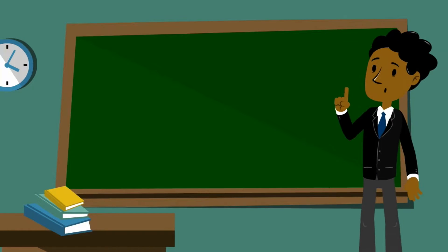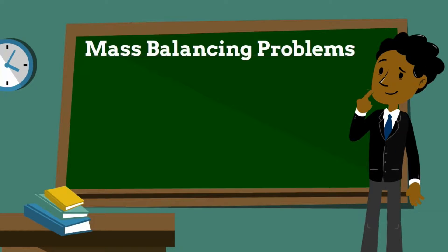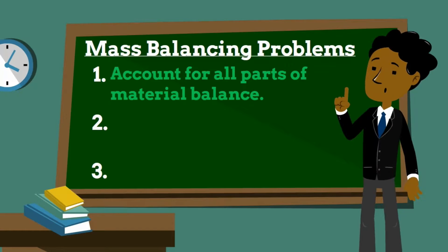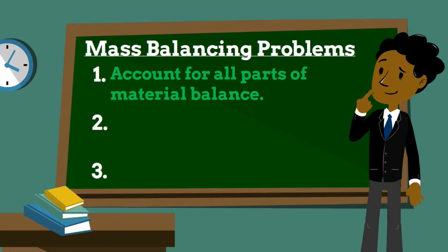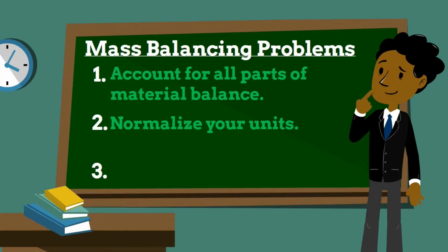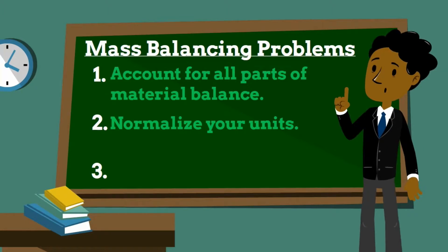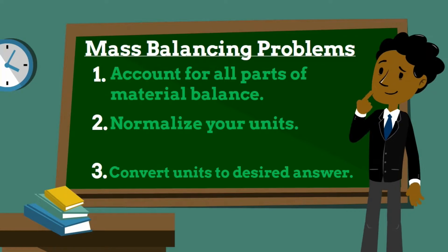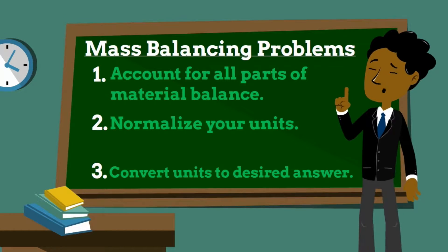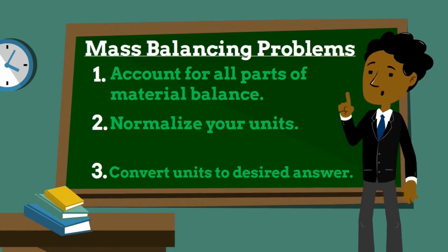Whenever you're solving waste management problems, you need to remember the rules of mass balancing. Number one, you need to account for all parts of the material balance, whether it's accumulation, disposal, or generation. Number two, you need to normalize your units so you can add and subtract the different parts of the system more easily. And last but not least, you need to convert your units to the desired answer, because most times they will be different.